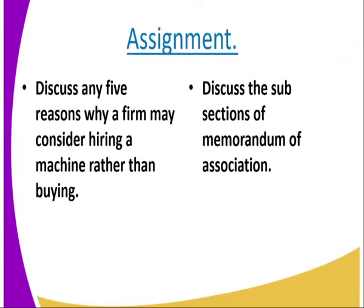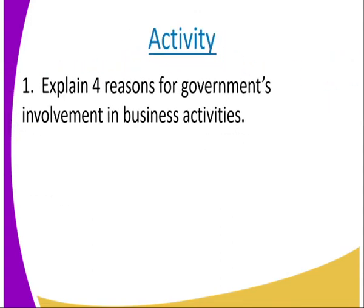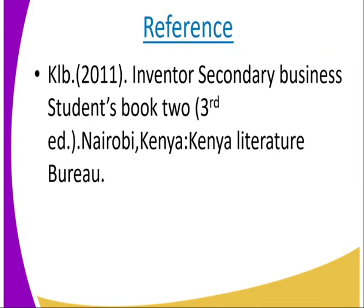Assignments: Number one — discuss any five reasons why a firm may consider hiring a machine rather than buying. Number two — discuss the subsections of a memorandum of association. Activity: Explain four reasons for government involvement in business. Reference: KELB 2011 Inventor Secondary Business Student Book 2, third edition.